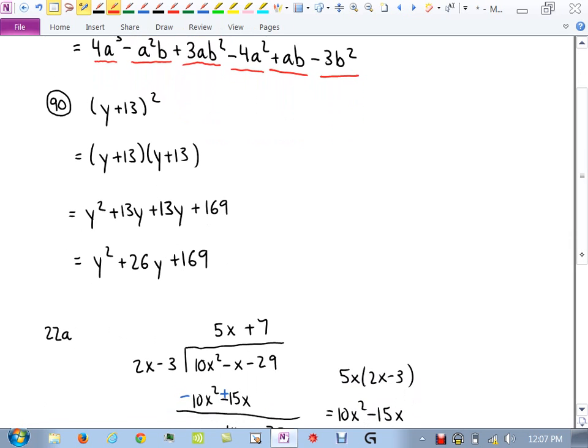Number 90. We have a binomial and we're squaring it. So that means to put the binomial times itself and then just do your multiplication expansion. y times y is y squared. y times 13 is 13y. Inside terms, 13 times y is 13y. And 13 times 13 is 169. I can combine the middle two terms together because they're like terms. That gives me a 26y. The two outside terms, nothing happens. They just stay the same. So there's your answer.